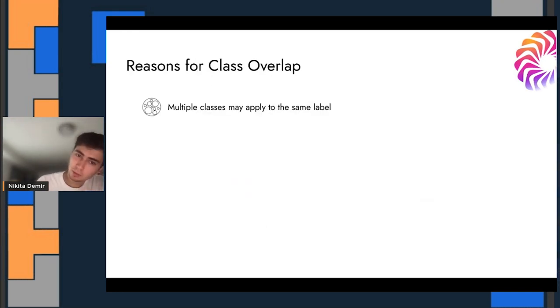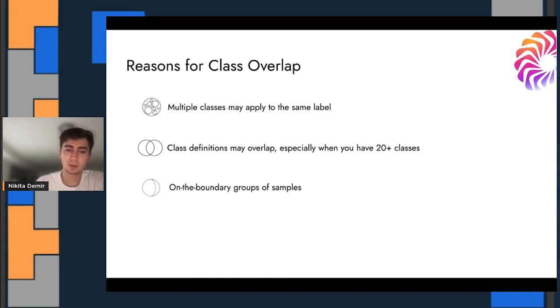So why does class overlap happen? Multiple classes can apply to the same label, like we saw with the cowboy boot, cowboy hat example. Also, the class definitions may overlap. Especially when you have many, many classes, so many of them that things can get a little fuzzy sometimes. And on the boundary groups of samples. This is basically what we call groups of samples that are very difficult for the model. So your class definitions may be fine. Maybe the dog breeds are very set in stone. There's not really room for overlap. But when you have a zoomed in photo, then things get confusing. And you'll find these groups of samples in your data set that are difficult because of some nature of the input to the model.